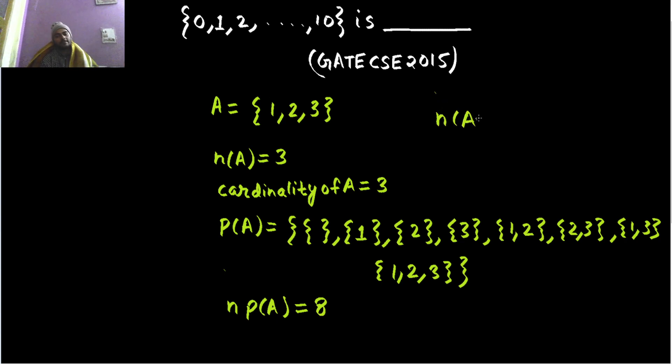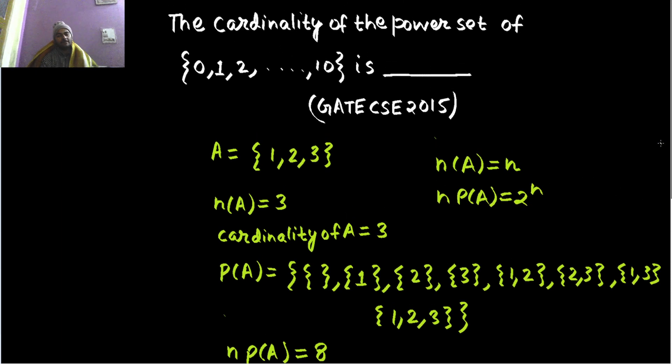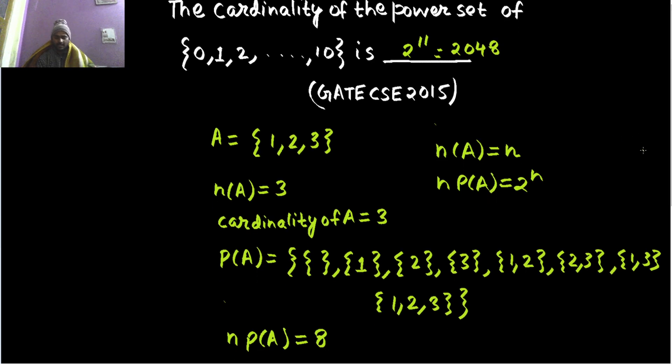If the number of elements in A equals n, then the number of elements in power set of A equals 2^n. By that idea we can easily say that in this set we have 11 elements: one to ten and zero. So the number of elements is 11, so this will give you 2^11. If they ask in integer, you can easily say 2^11, or 1024 times 2 is 2048. This is your final answer.